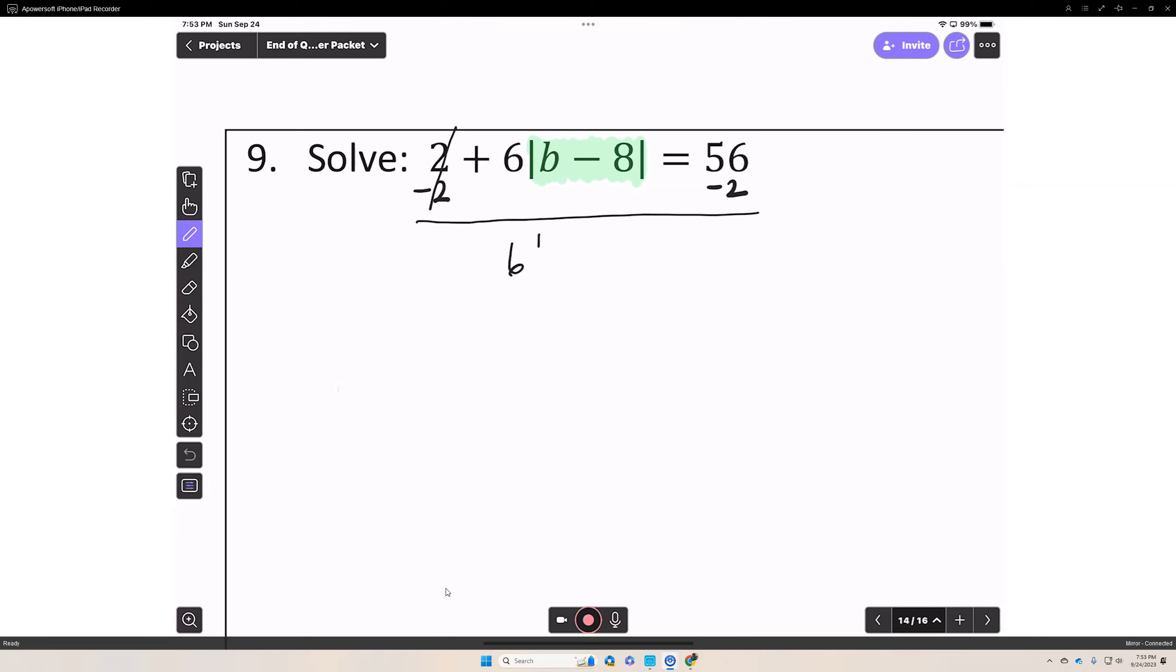You just have 6 times the absolute value of b minus 8 equals 54. Sometimes students want to multiply the 6 times b and the 6 times 8, but you don't want to do that. What you want to do is divide both sides by 6.